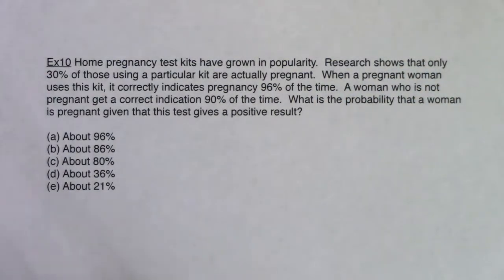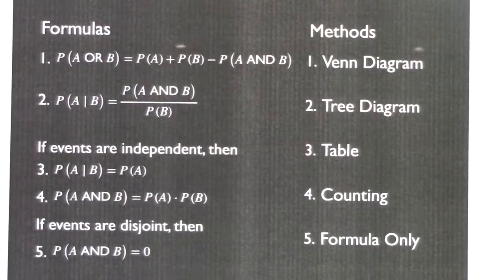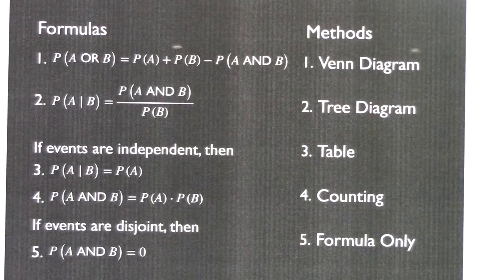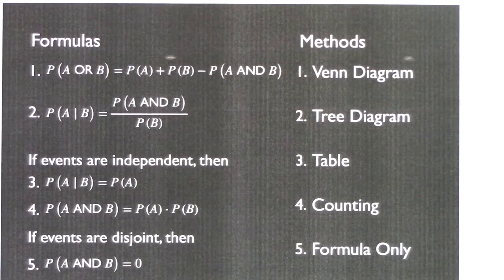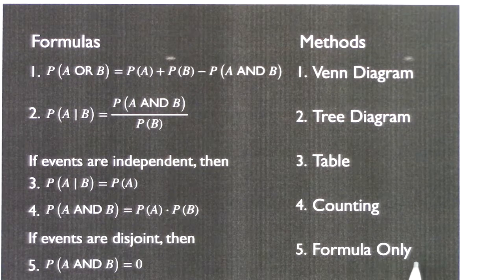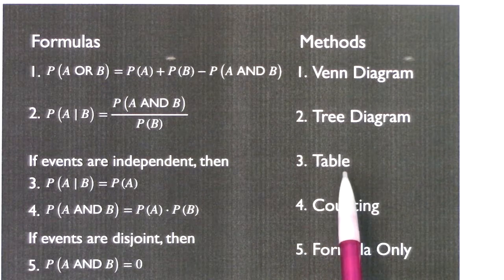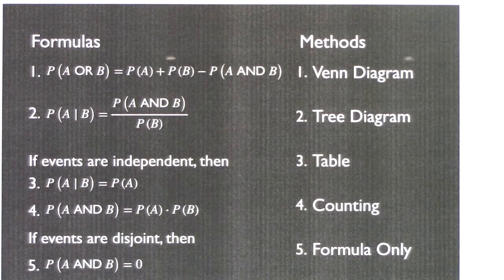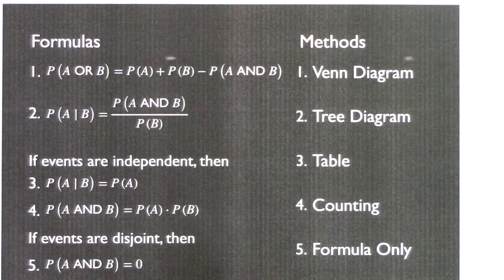Two categorical variables — women are either pregnant, yes or no, and then they take a pregnancy test and they test positive or negative. Let's talk about the methods we can rule out. As soon as you see any words written on your paper, you are not in a formula-only situation — I could rule that out right away. I can also rule out the table method immediately because I literally was not given a table.